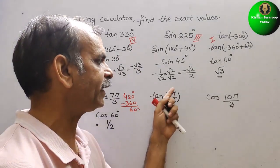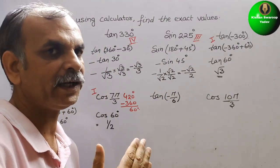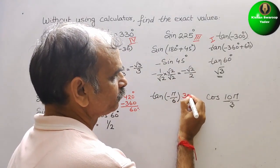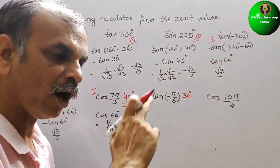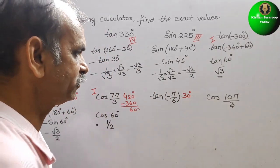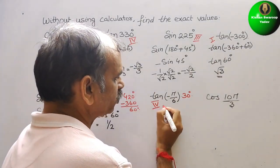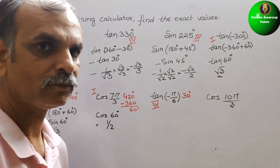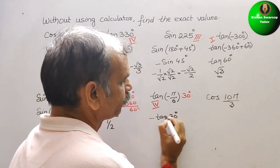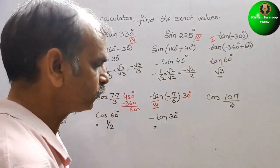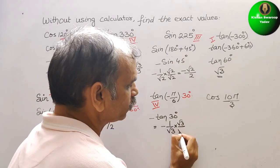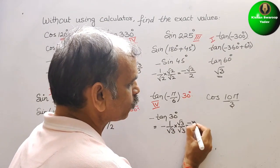Next is tan(−π/6). π/6 means 180/6 = 30°, so it becomes minus 30°. Minus 30° means we go clockwise, so it lies in the fourth quadrant. In the fourth quadrant, tan is negative. So it will be minus tan 30°. Tan 30° = 1/√3, so we get minus 1/√3. Rationalizing gives minus √3/3.